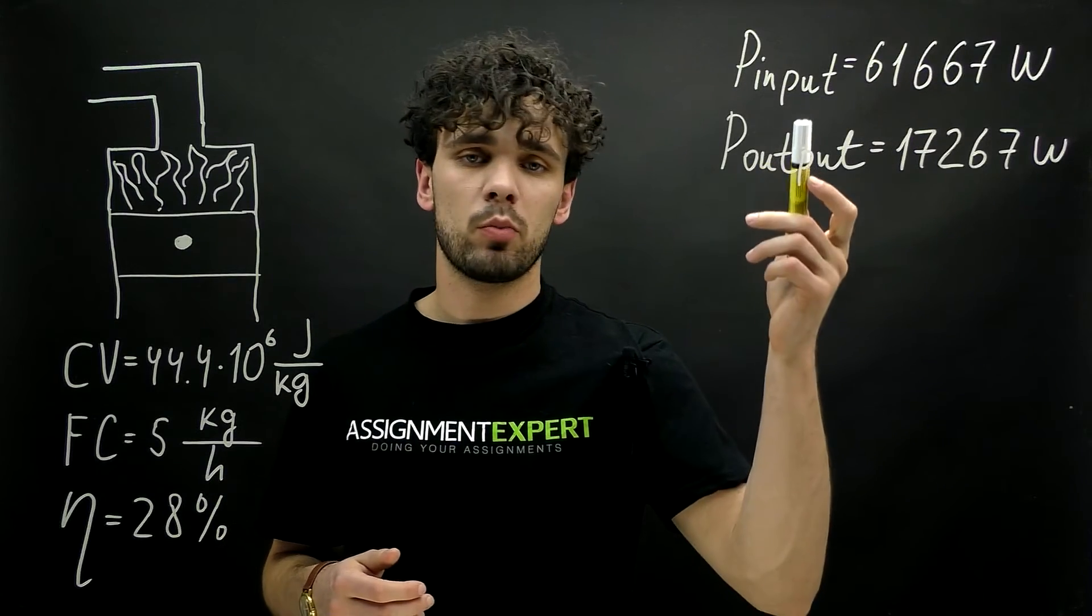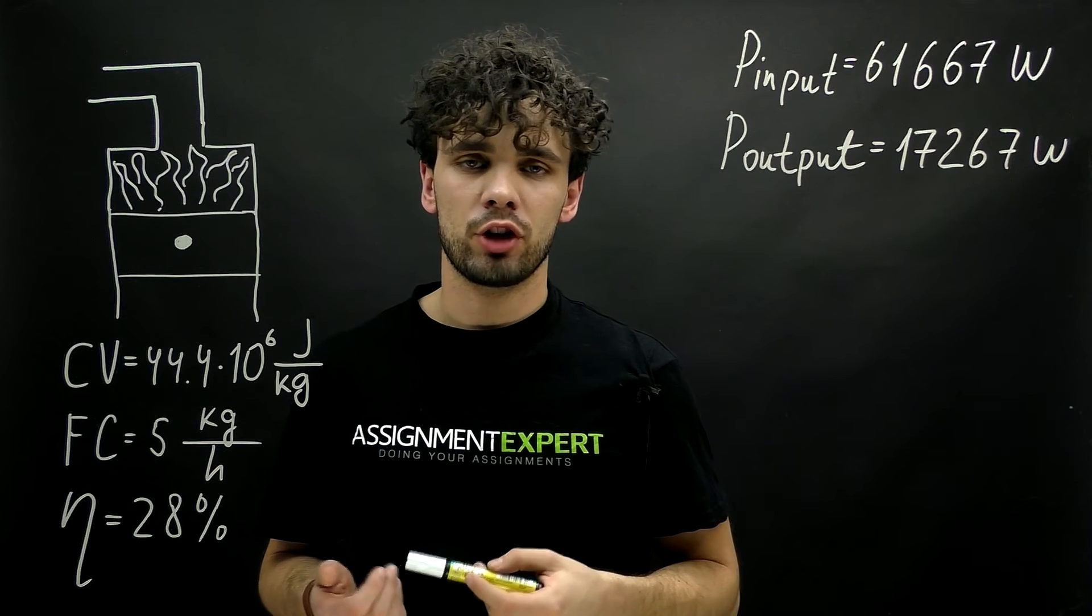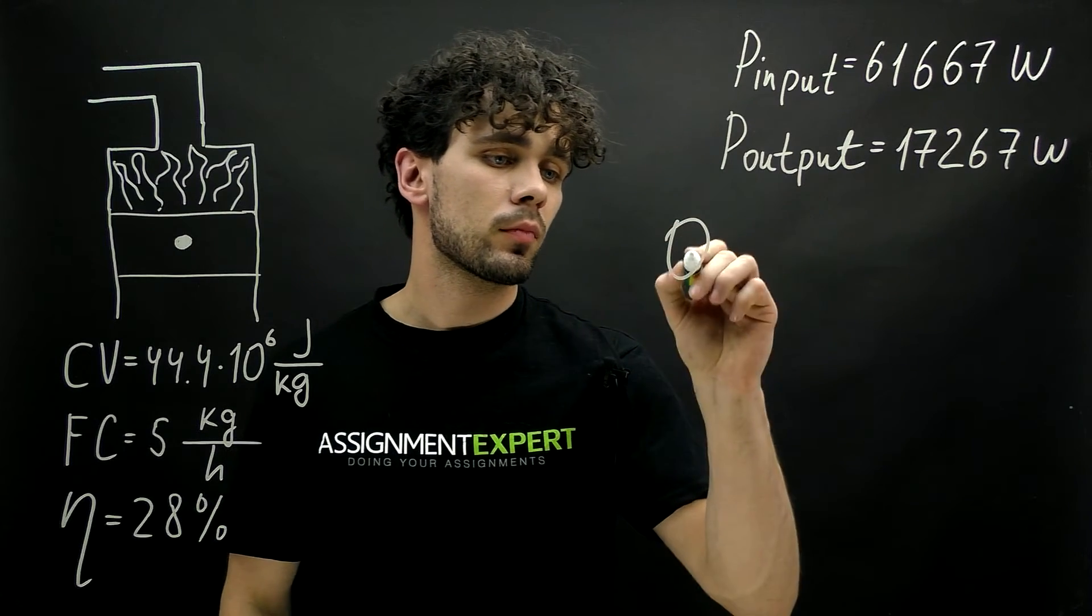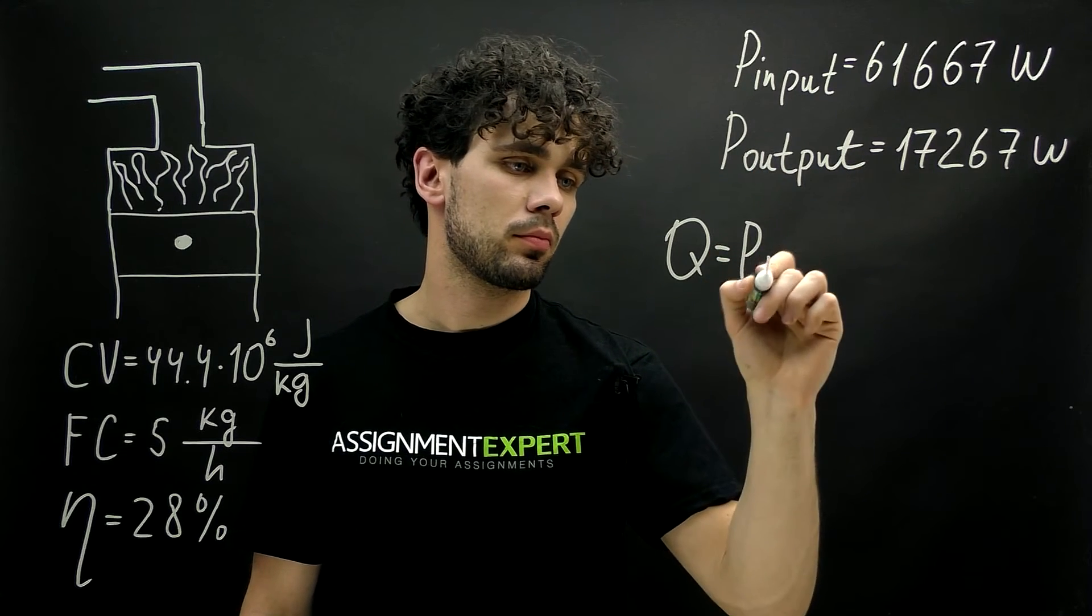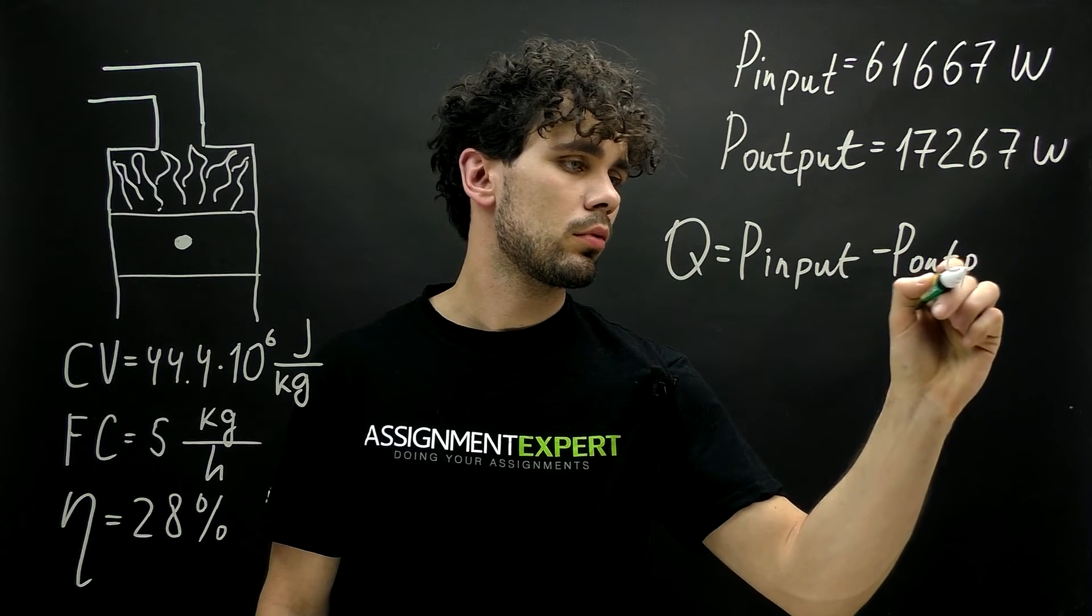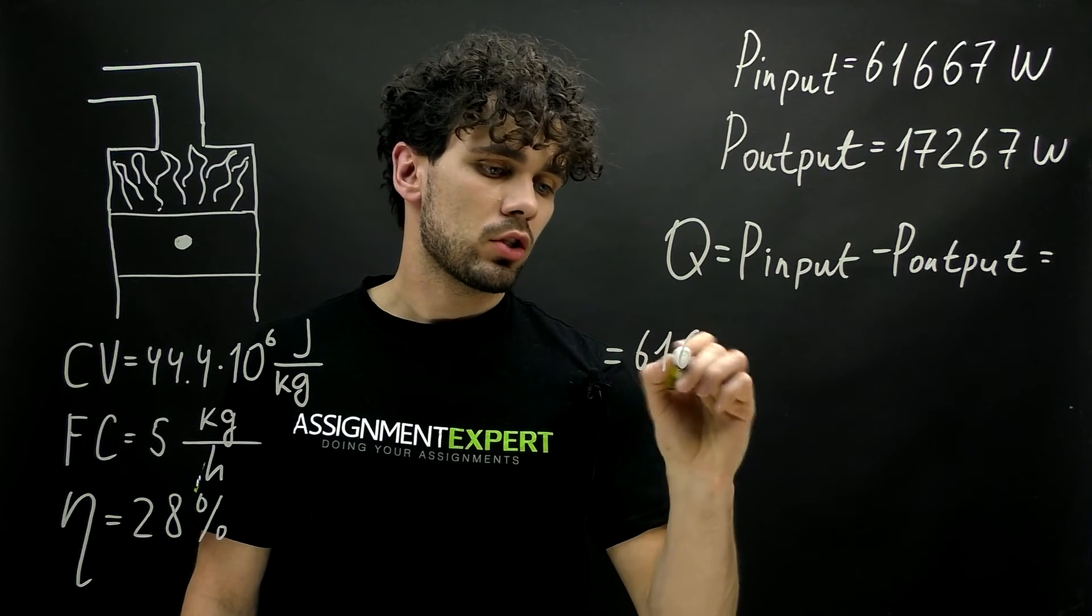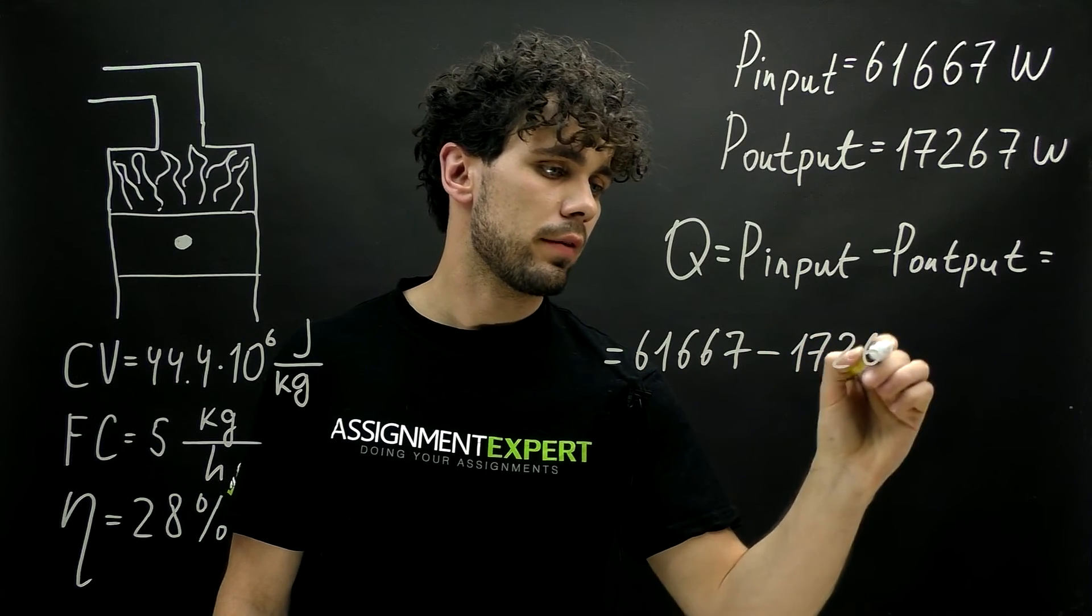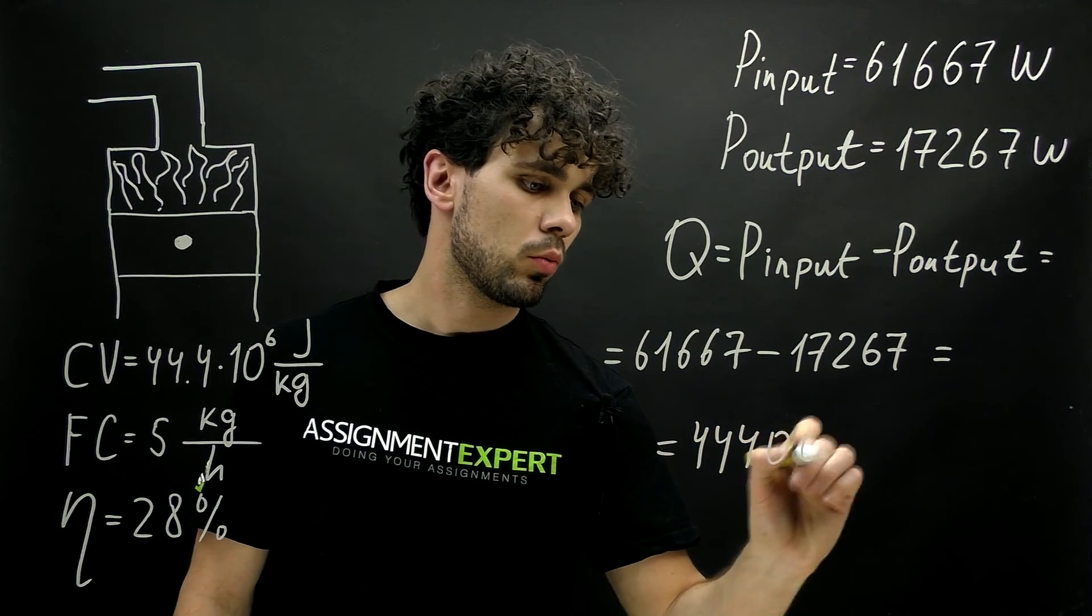So, now we know the input power and the output power of our engine. And we can finally find the rate of rejection. The rate of rejection is simply the losses of power. So, to find it, we just need to subtract power output from the power input. And this gives us 61,667 minus 17,267, and this is equal to 44,400 watts.